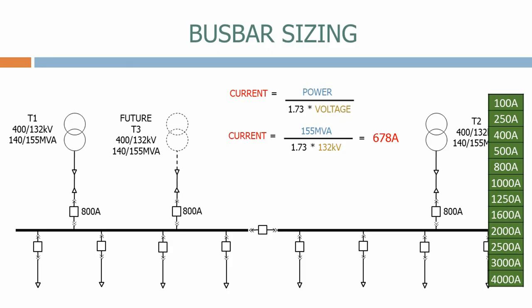Next, let's look at the busbar rating. It's important that when we're sizing the busbar, we include all future transformers in this calculation, as it's very difficult and expensive to change the busbars at a later date. So for this example, we have three transformers each carrying 678 amps. This gives a grand total of 2034 amps. Looking down the table, the correct busbar rating to choose is therefore 2500 amps. The busbar section breaker will carry the same current, so let's rate it at 2500 amps as well. We've now sized all of the equipment.